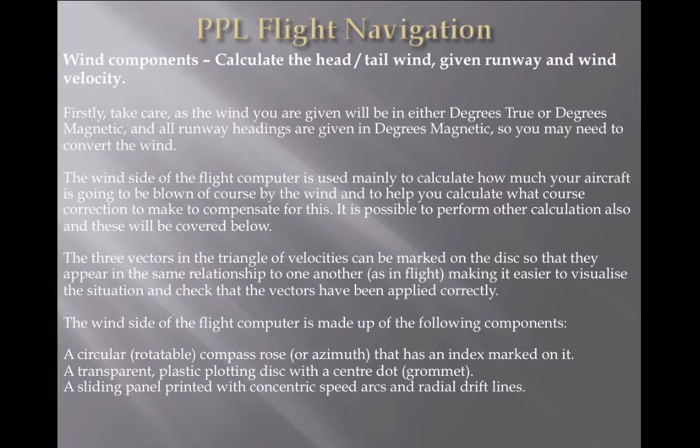On the wind side of the flight computer, it's made up of the following components: the circular rotatable compass rose — the posh name for that is azimuth — which has indexes marked on it; a transparent plastic plotting disk with a little dot in the center, also known as the grommet; and the sliding panel printed with concentric speed arcs and radial drift lines.